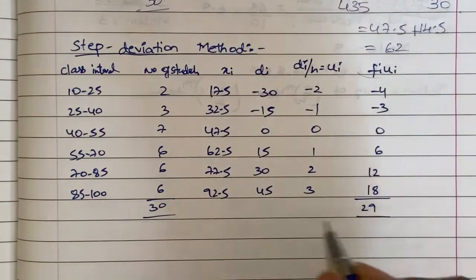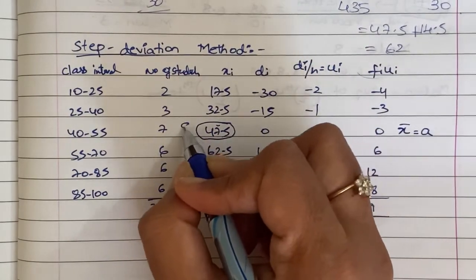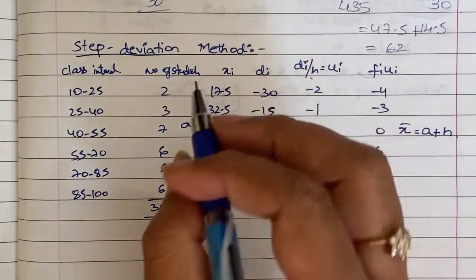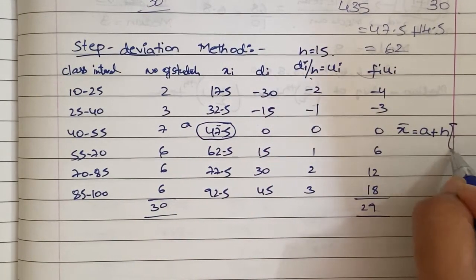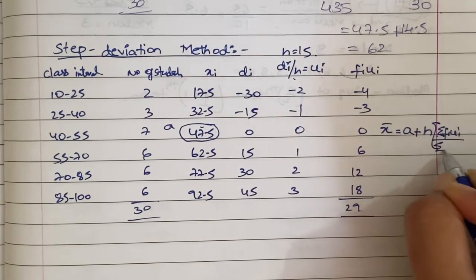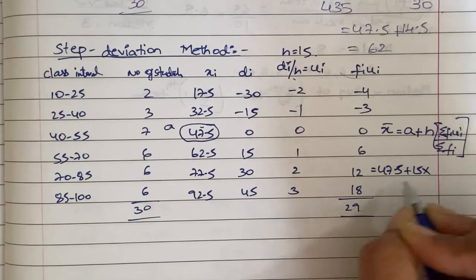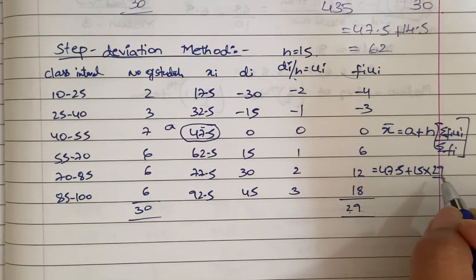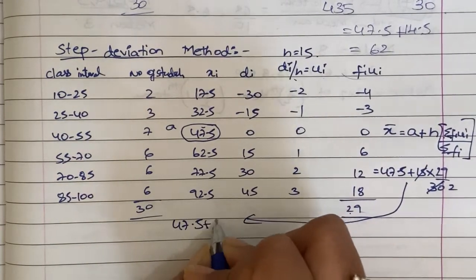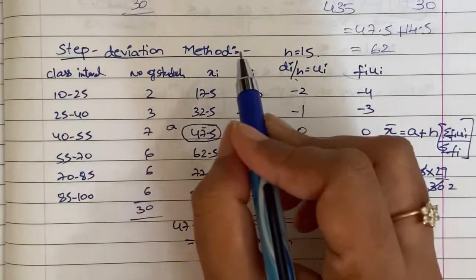Now in this case, formula to find the mean: x bar is equal to a, same. In this case, the assumed mean is a, plus h. h divide. So now in this case, h is equal to 15, 15 sigma of fi ui by sigma of fi. So h is 47.5 plus 15 into 29 by 30. This is 2 times cancel. So the mean of this data is 62. So the mean of this data is 62, and the mean of this data is 62.